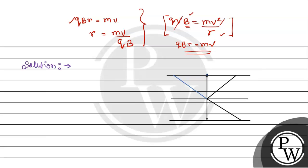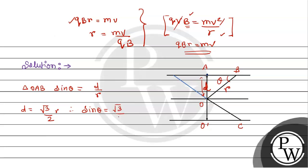From the diagram, we identify point A, point B, point O-dash, and point C. Looking at this triangle, we calculate sin θ equals d upon R. Since d is given as d equals R·root 3 by 2.